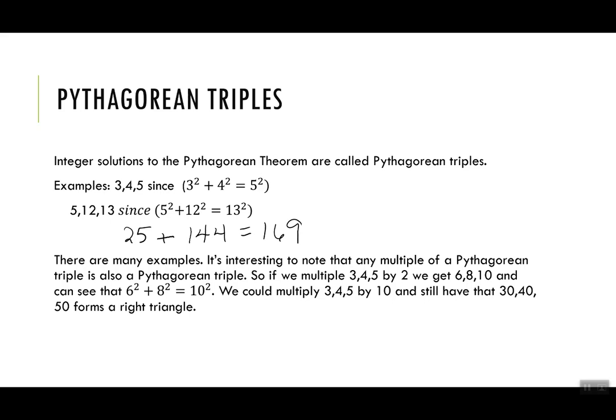What's really helpful, I think, though, is that once a triple occurs, like 3, 4, 5, multiples of the triple also work. So say I took 3, 4, 5, and I multiply them by 2, which is 6, 8, 10, 6 squared plus 8 squared is 10 squared is also a Pythagorean triple.